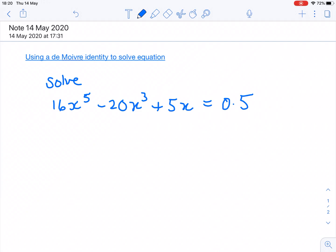Following on from the video of how to generate an identity from De Moivre, we're going to use that identity now to solve an equation like the one on screen. So 16x^5 - 20x^3 + 5x = 0.5.